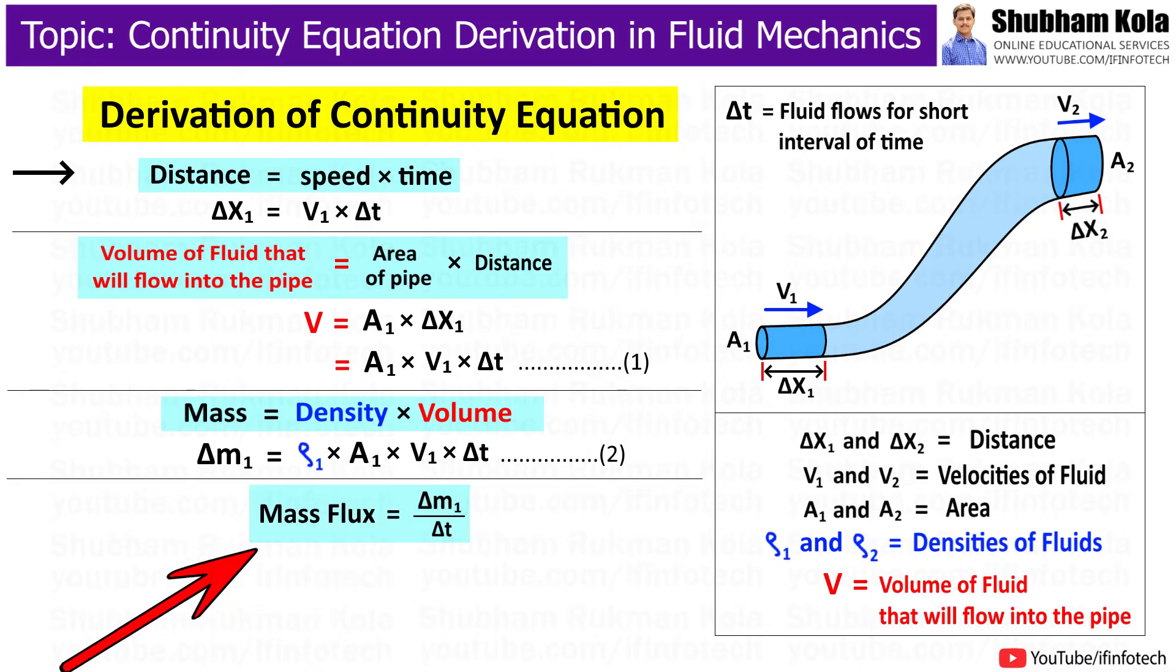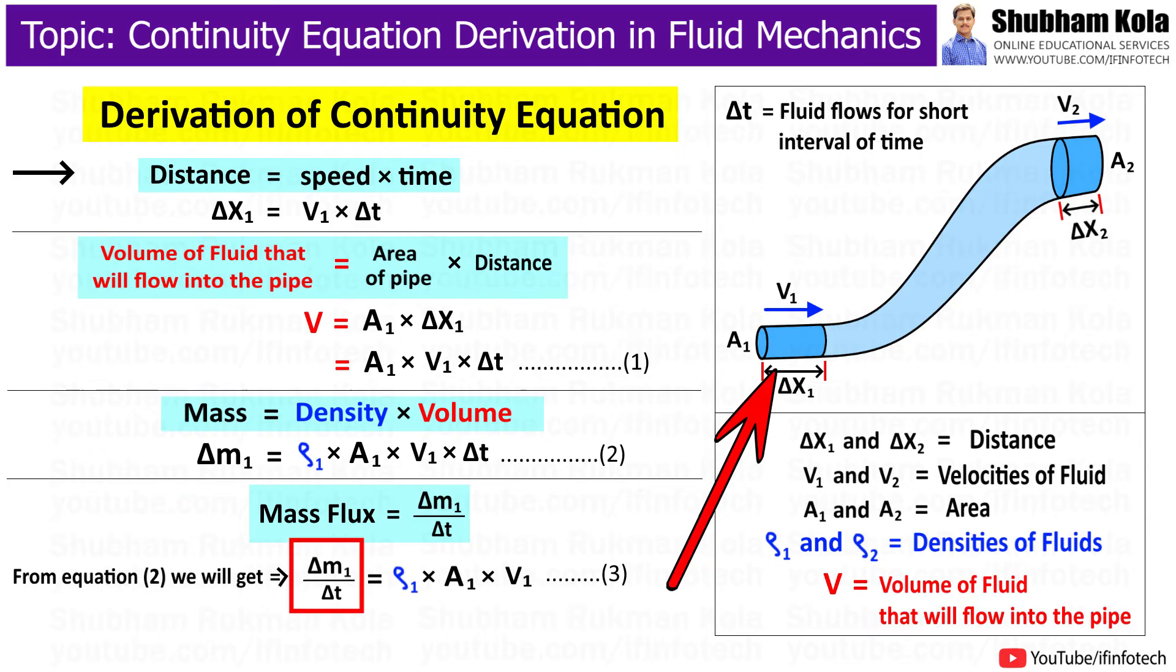Now, we have to calculate the mass flux at lower part of the pipe. And mass flux is defined as mass of fluid per unit time passing through any cross-sectional area. Therefore, mass flux for lower end of the pipe, that is delta m1 upon delta t, will be equal to rho 1 times A1 V1.